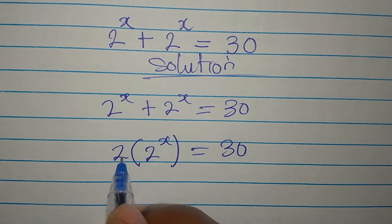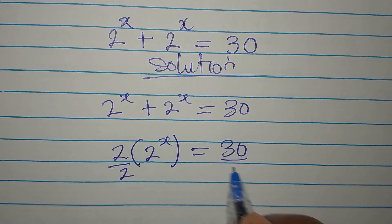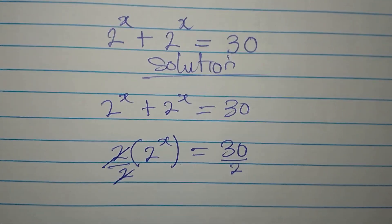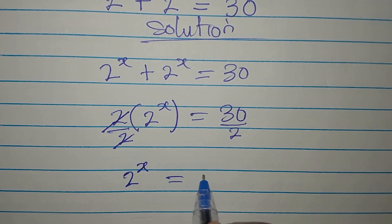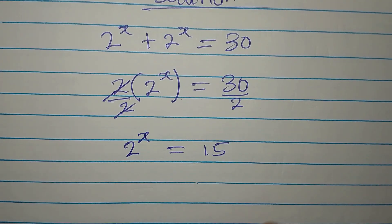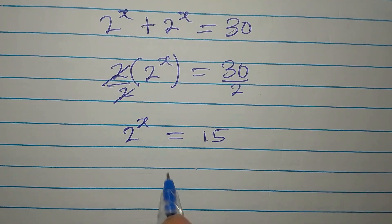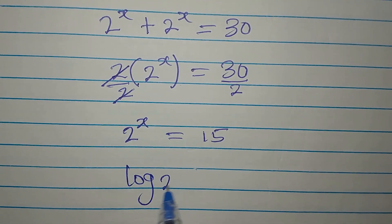The next step is to remove this 2, as we divide by 2, dividing both sides by 2. Now, 2 to the power of x is obviously 15, and we cannot write 15 in this form, so we'd rather take the log of both sides.